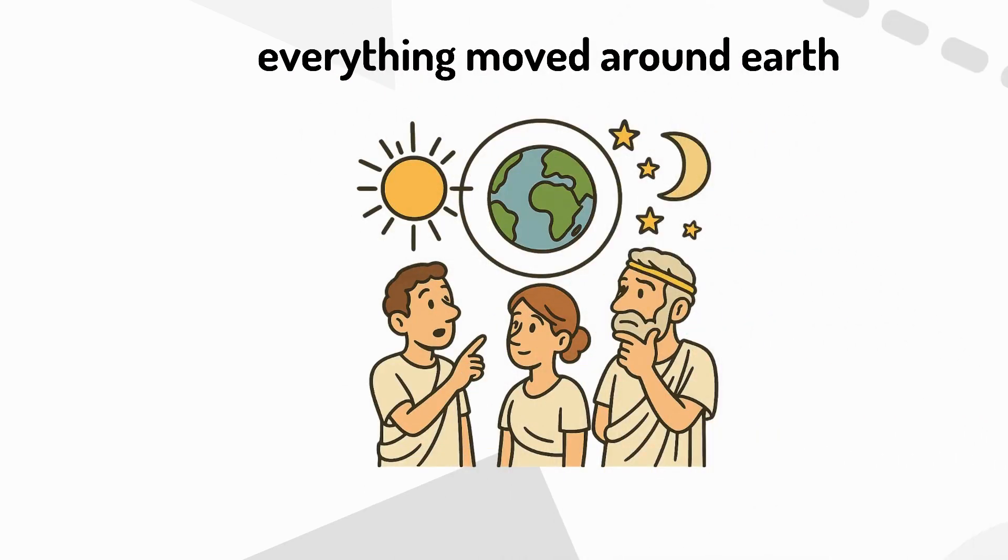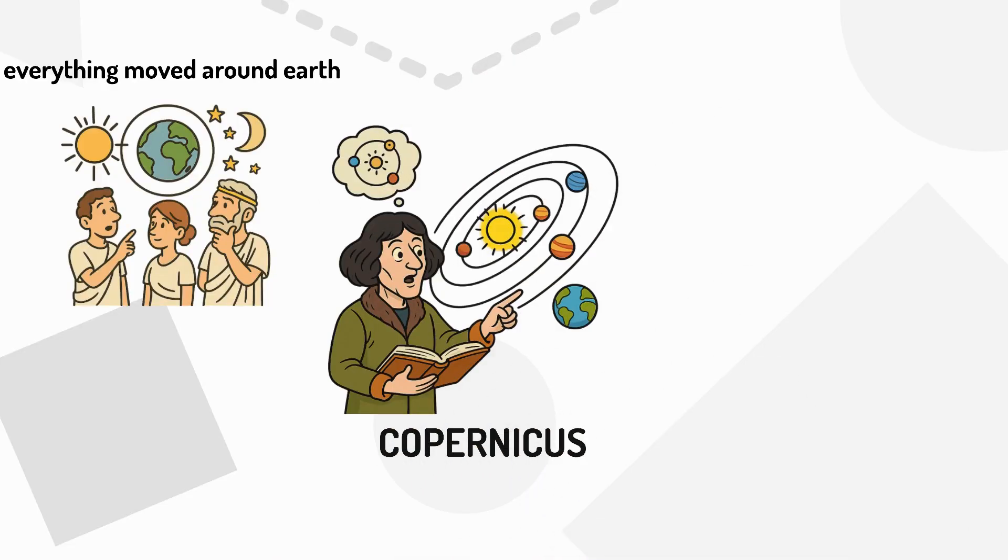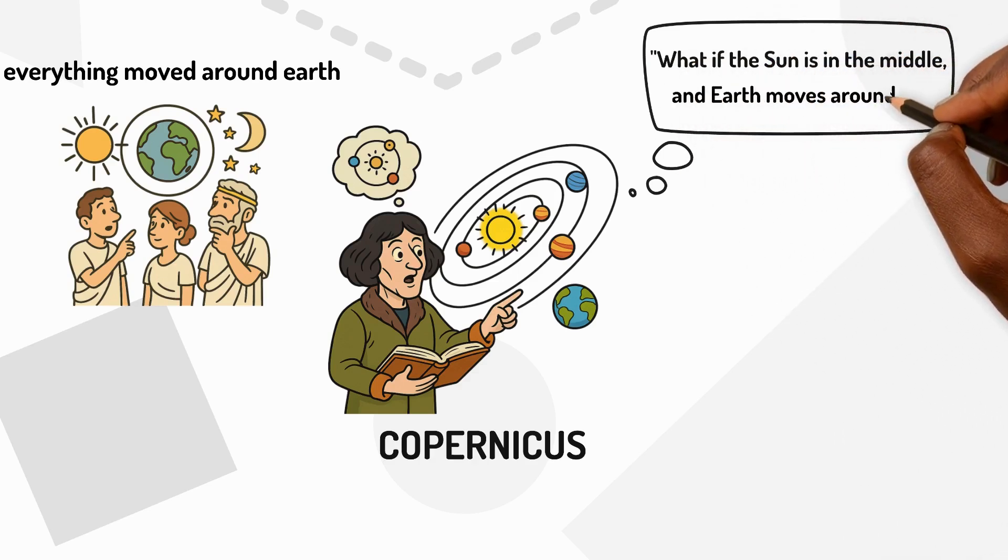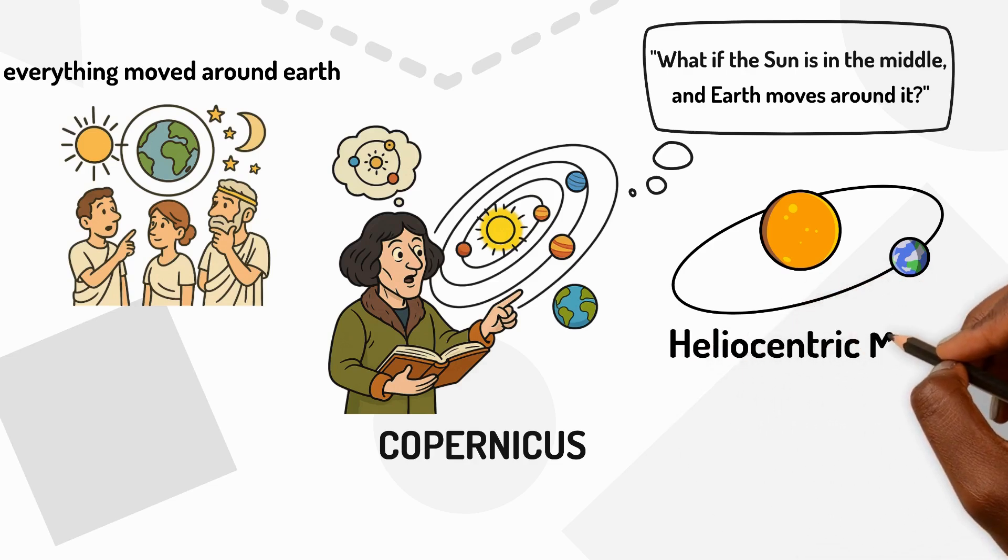Well, in the 1500s a clever man named Copernicus had a new idea. Copernicus said, what if the Sun is in the middle and Earth moves around it? This is called the heliocentric model.